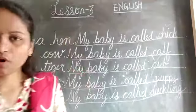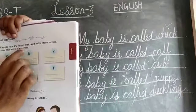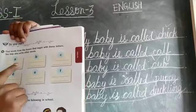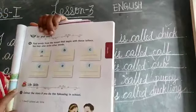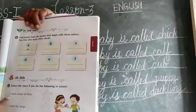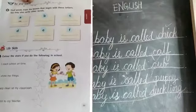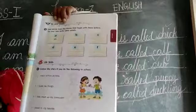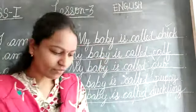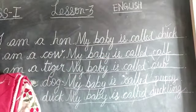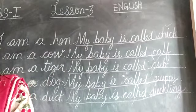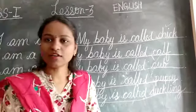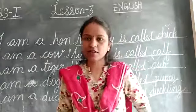Page 33 also — find words from the lesson that begin with these letters: A, B, C, D, E, F. Life skills — colour the stars if you do the following in school: I reach school on time, I share my things, I help clean up my classroom, I listen to my teacher. If you have done all this, you have to colour the stars. This one is homework for you — whatever words beginning with B you find from the lesson, check and then write. We will do this in the next class. Try to do the homework. Okay children, take care, bye.